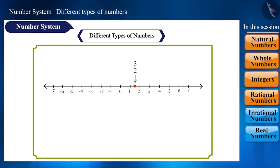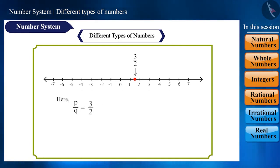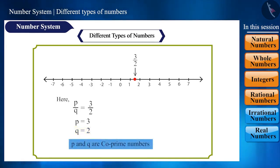And so, when we represent P by Q on the number line, we assume that Q is not equal to 0 and P and Q have no common factor other than 1. That is, P and Q are co-prime numbers.